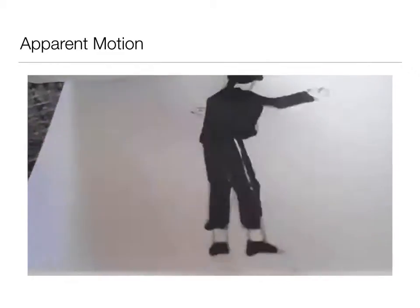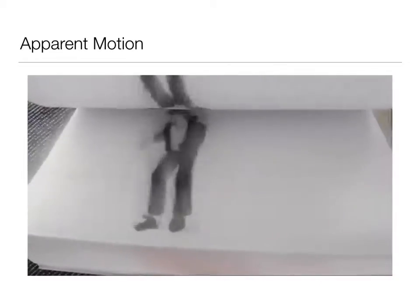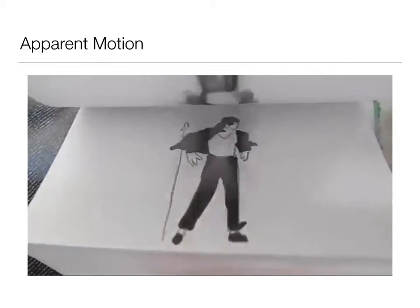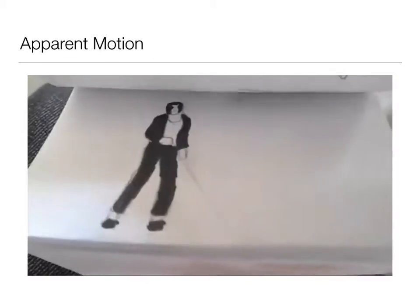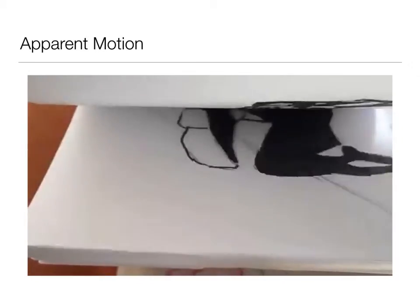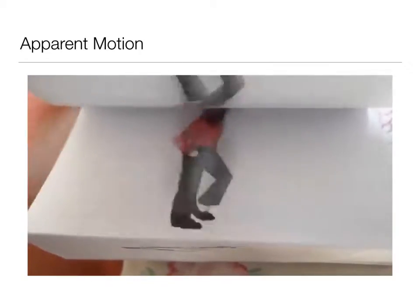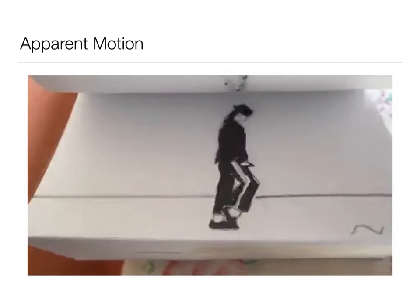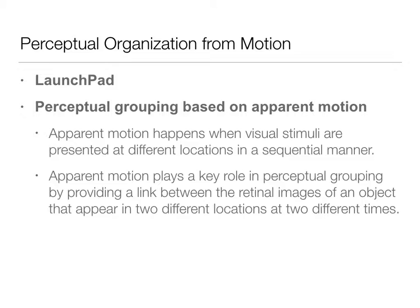These are just still images, but when they're moving, it gives the perception that the object is moving because the retinal images are changing. This is a really intricate version of this. There's also a launchpad activity that will walk you through this so you can see how it works in more basic situations, not just intricate but pretty cool demonstrations like this one. There is a launchpad assignment on perceptual grouping based on apparent motion.